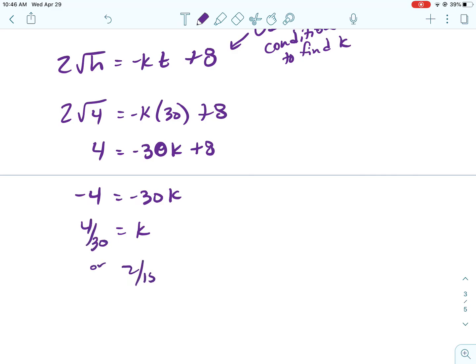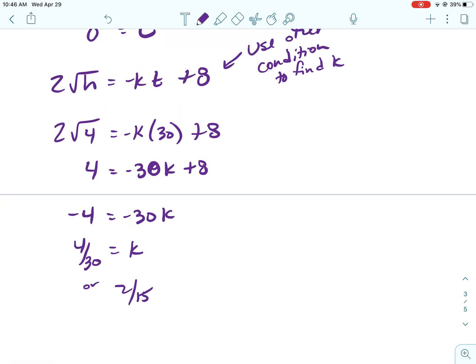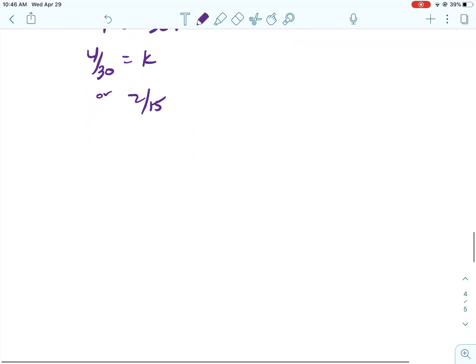So it's going to be 2 times 2, which is 4. I'll go ahead and subtract the 8 and divide by the negative 30. So K is 4 thirtieths, or if you wanted to reduce it, 2 fifteenths.